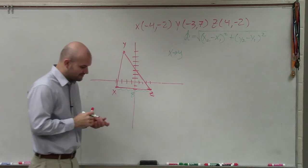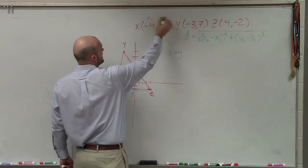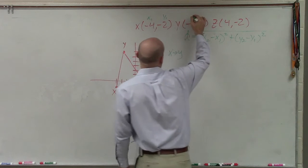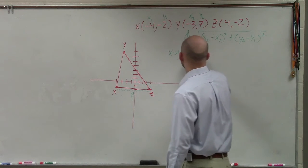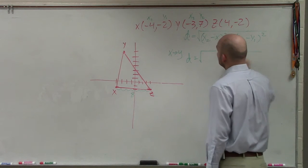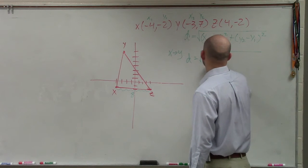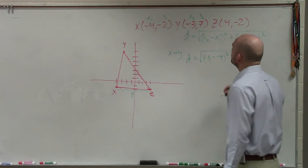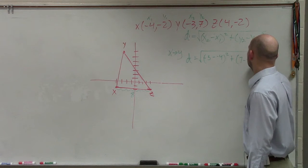So let's find this distance between x and y. Well, what I can do is label them. I'll call that x1, I'll call that y1. I'll call that x2, and I'll call that y2. So I say the distance between x to y is going to equal x2, which would be negative 3 minus negative 4 squared, plus 7 minus negative 2 squared.